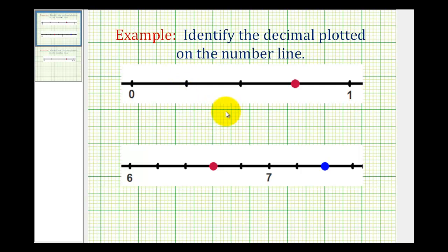In these problems, we want to identify the decimal plotted on the number line. Notice we have a value here plotted between zero and one. I think it's probably going to be easier if we actually write this as a fraction first, and then write the fraction as a decimal.